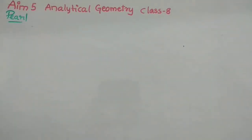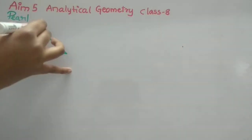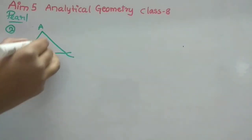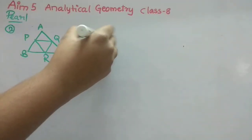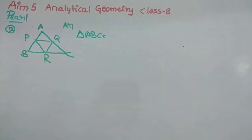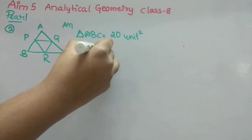Second question: P, Q, R are the midpoints of AB, BC, CA of triangle ABC. They have given us the area of ABC and we have to find the area of PQR. Drawing the figure — there is one triangle ABC and inside it a smaller triangle PQR formed by the midpoints. Area of ABC is 20 square units.